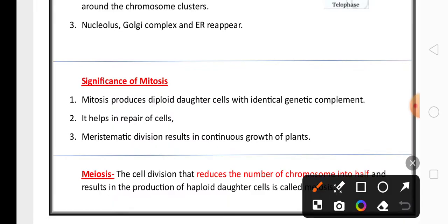Significance of mitosis is very important for two marks. It produces diploid daughter cells with identical chromosome number. It helps in repair of the cell and in growth and development.